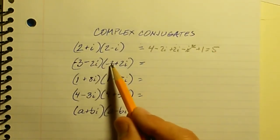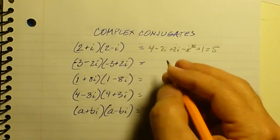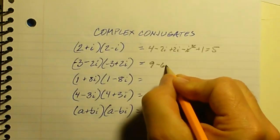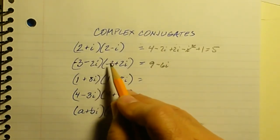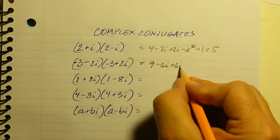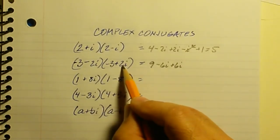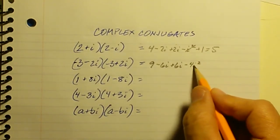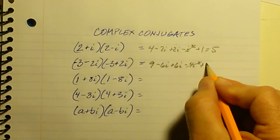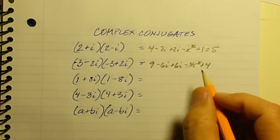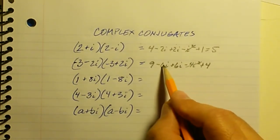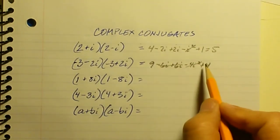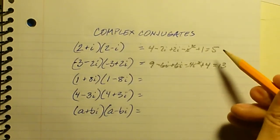Let's look at negative 3 minus 2i times negative 3 plus 2i: negative 3 times negative 3 is 9, negative 3 times positive 2i is minus 6i, negative 2i times negative 3 is plus 6i, and negative 2i times positive 2i is minus 4i squared. Since i squared is negative 1, that equals positive 4. The middle terms, negative 6i plus 6i, equal zero, and we end up with 9 plus 4, which is 13.